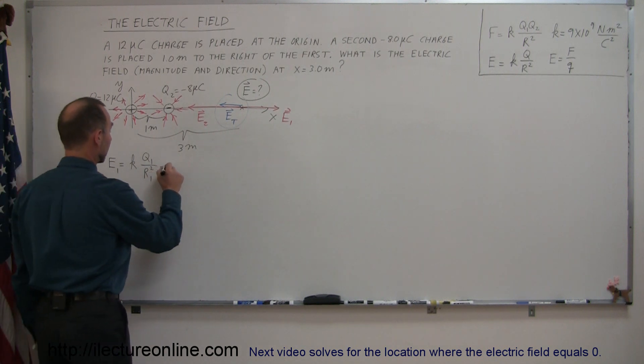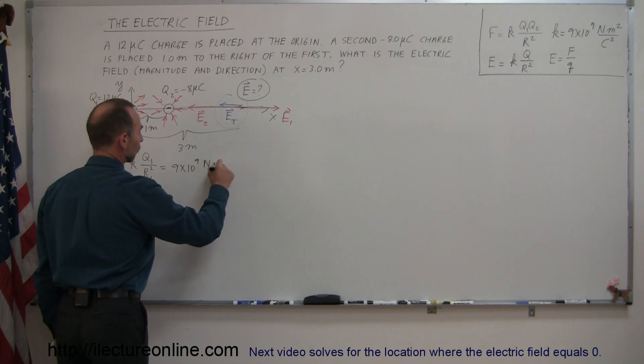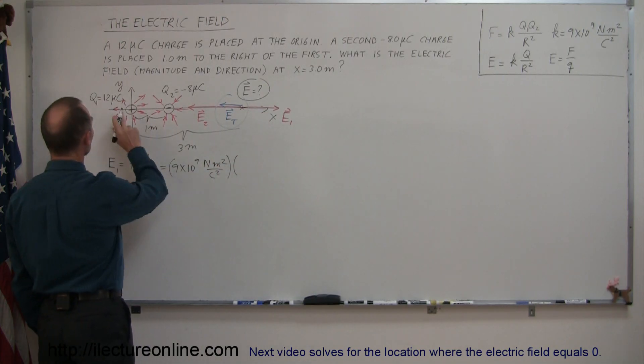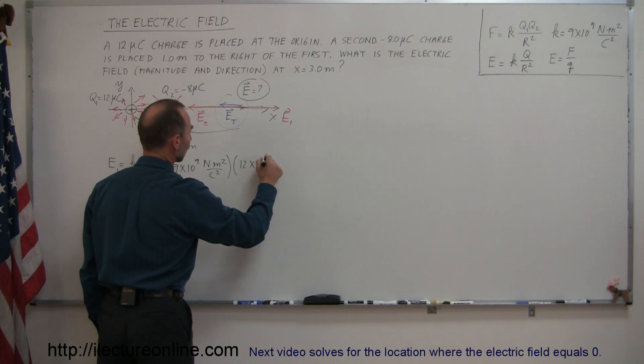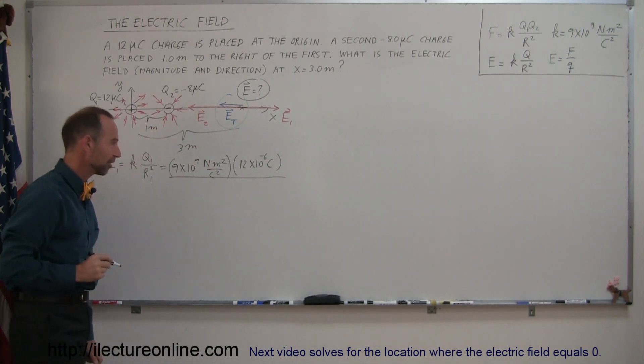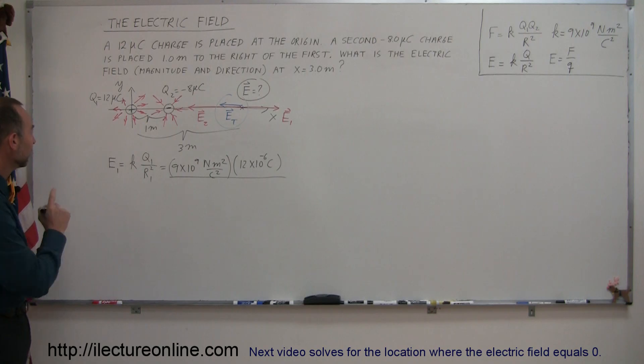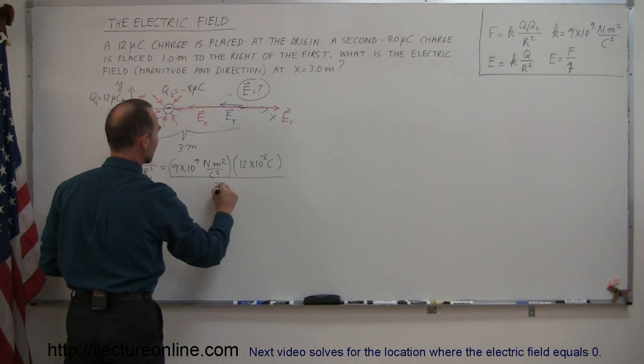Plug in those numbers. We get 9 times 10 to the 9th, that's newtons meters squared per coulomb squared, times Q1. Now Q1 was 12 microcoulombs, 12 times 10 to the minus 6 coulombs. That would be an awfully big charge if it was positive 6. Then the distance squared, so the distance is 3 meters, so that's 3 meters squared.